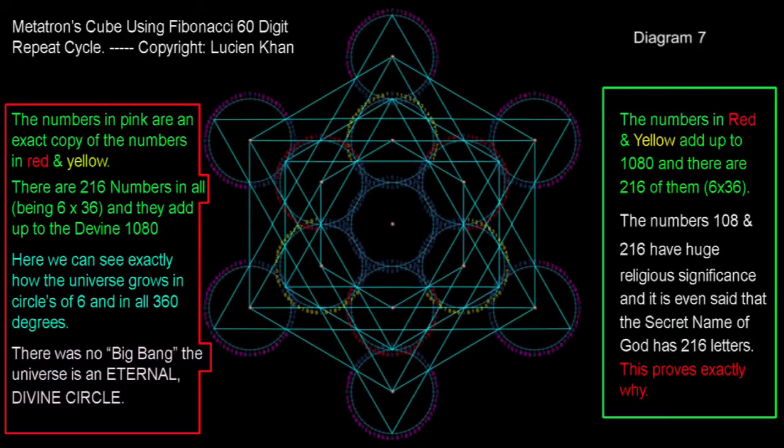Remember, it is believed that the secret name of God has 216 characters. Here it is revealed in Metatron's cube.